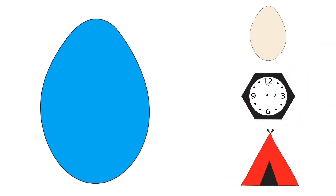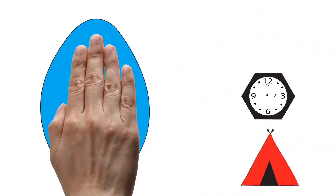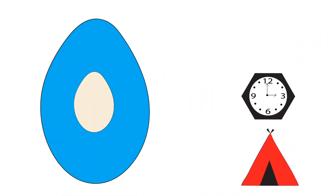Can you see an object that is shaped like an oval? An egg is shaped like an oval. Oval.